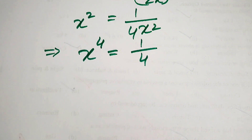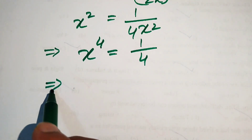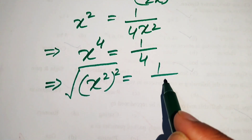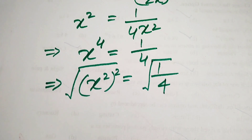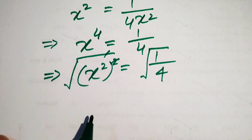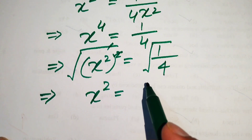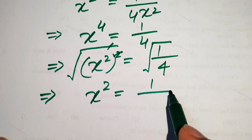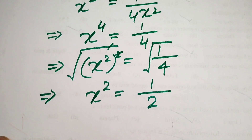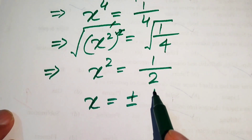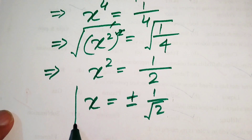To find x, we take the square root on both sides. The left-hand side gives x squared, and the right-hand side gives one half. Taking squaring again on both sides, we get x equals plus or minus 1 over square root of 2.